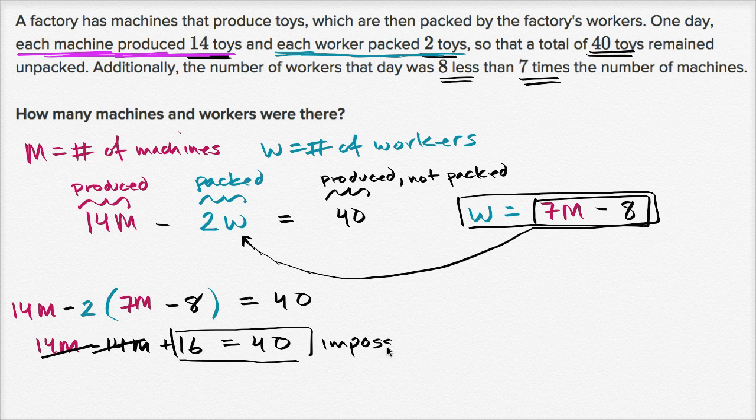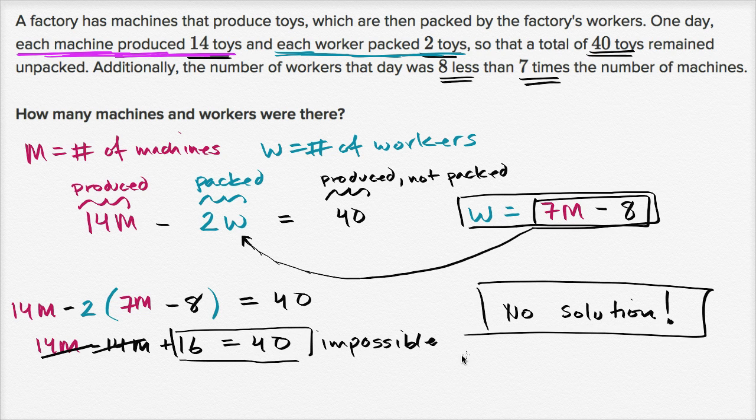This right over here is impossible for 16 to be equal to 40. And because of that, there are no solutions to this. There's no M and W pair that matches the constraints they gave us. So there is no solution.